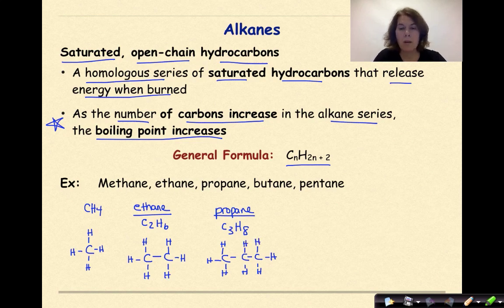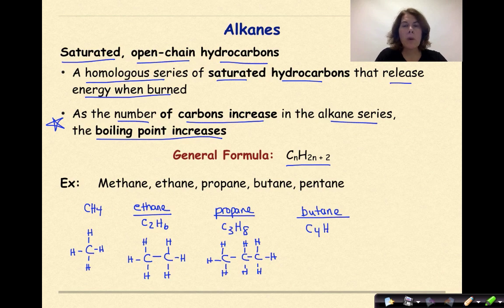Now let's do butane. But means four, so we're going to have C4H10 — two times four is eight, plus two more is ten. So we're going to have four carbons surrounded by ten hydrogens.